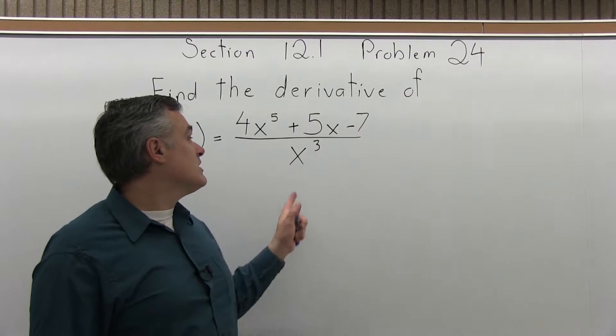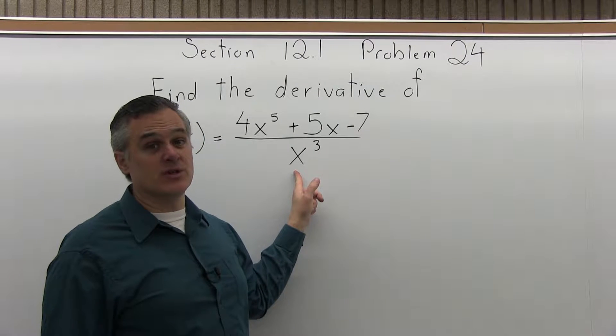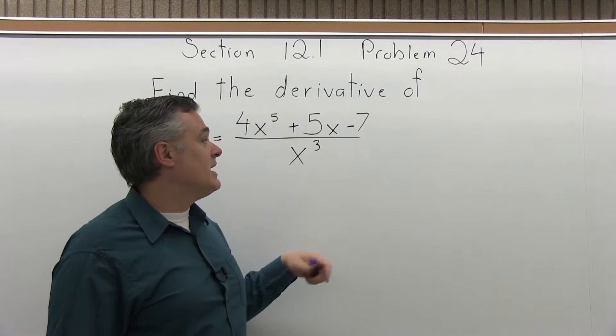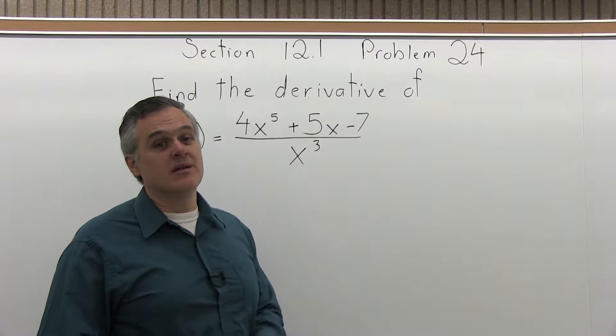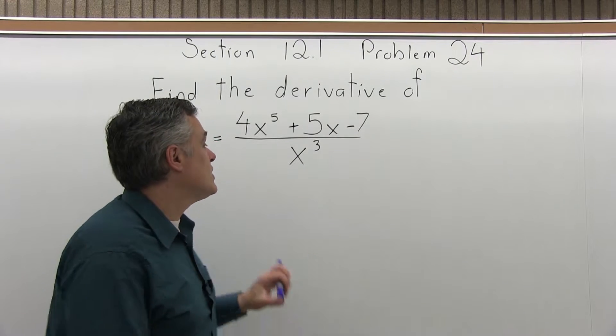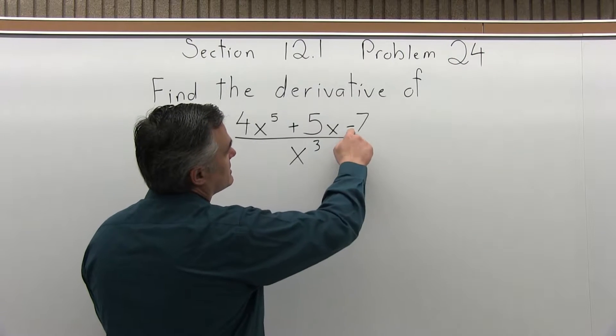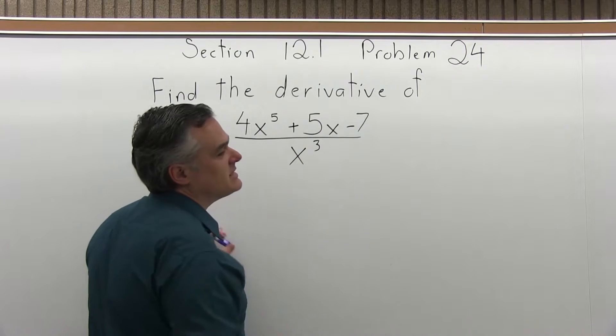Now, when we take a derivative, we can't have a variable in the denominator. And here we have a variable in the denominator. And up until this point, we've been able to just move it up into the numerator by making the exponent negative. So I can't just bring this up because it's over three different pieces.